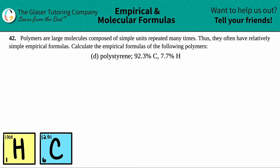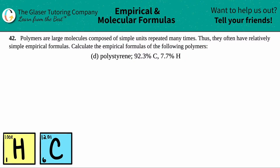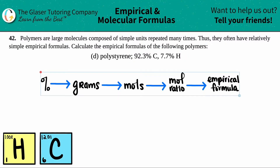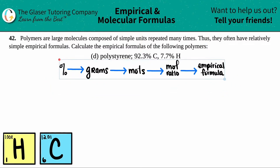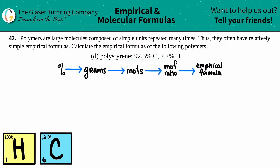Polystyrene is a very simple formula that consists of just two elements: carbon and hydrogen. It just repeats itself over and over again to make these large structures. So let's figure out what the empirical formula is of polystyrene. We've done many different types of empirical formula problems, and we can find an empirical formula from a percent composition using four steps.